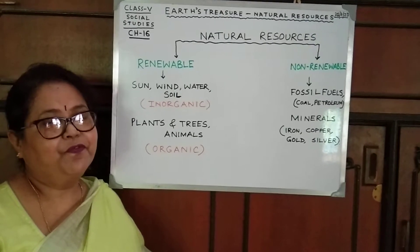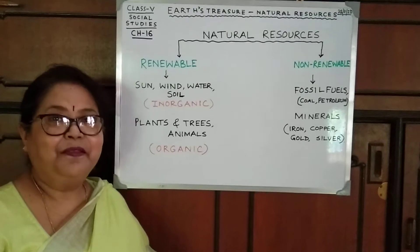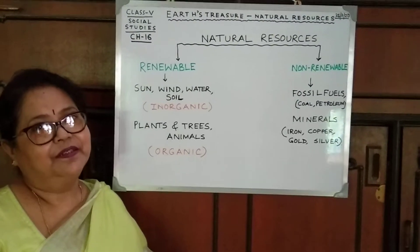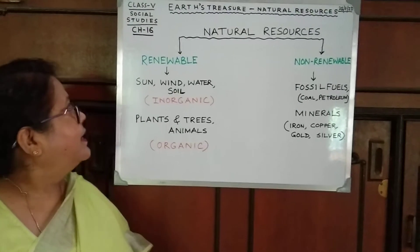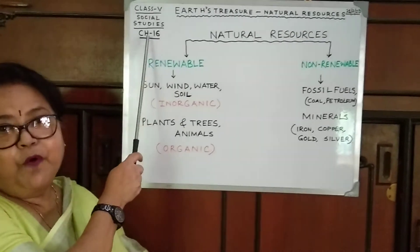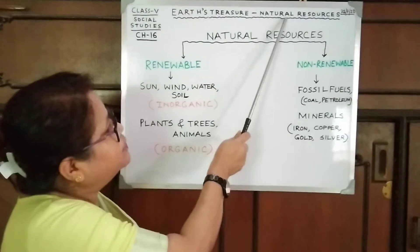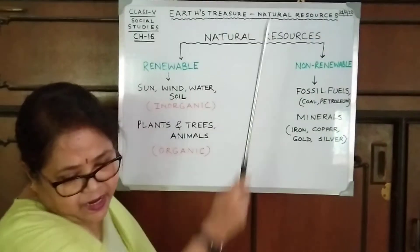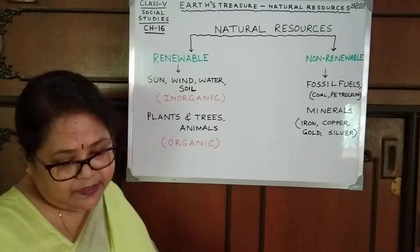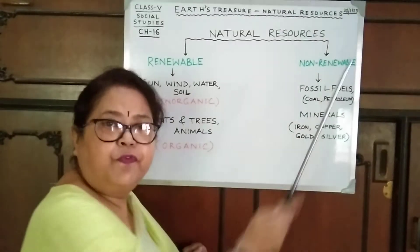Welcome, students of Class 5. I am Shoma Selmiss, your social studies teacher. Today I will explain Chapter 16. The name of the chapter is Arts, Treasure, Natural Resources. This video is connected to your lesson plan for the 21st of July.